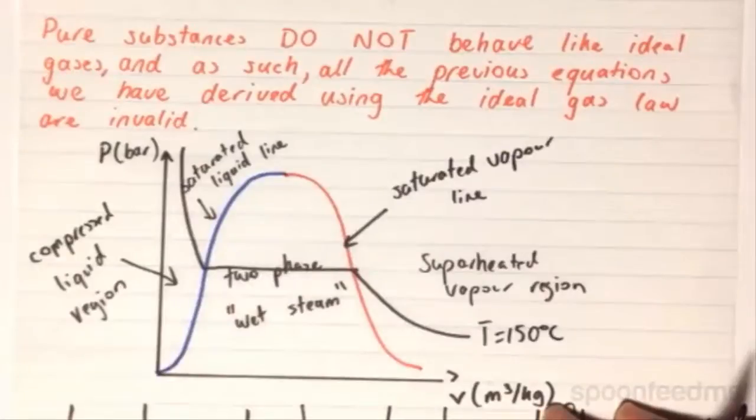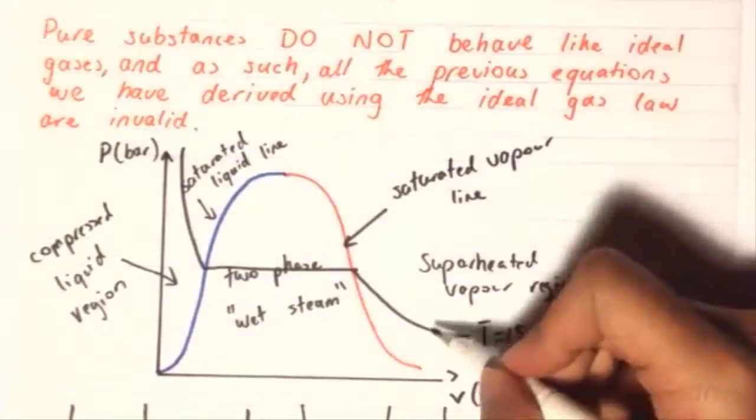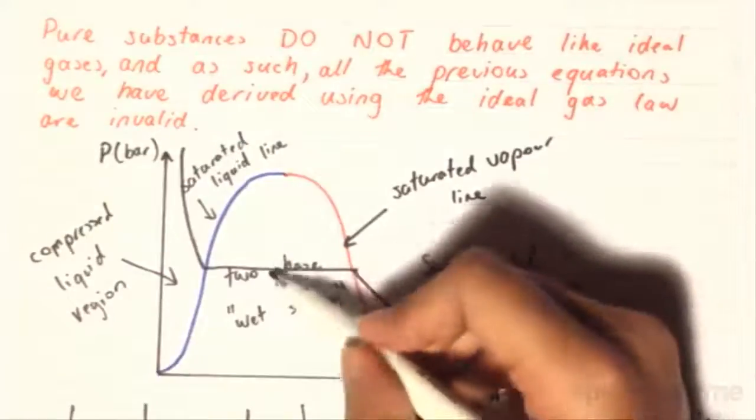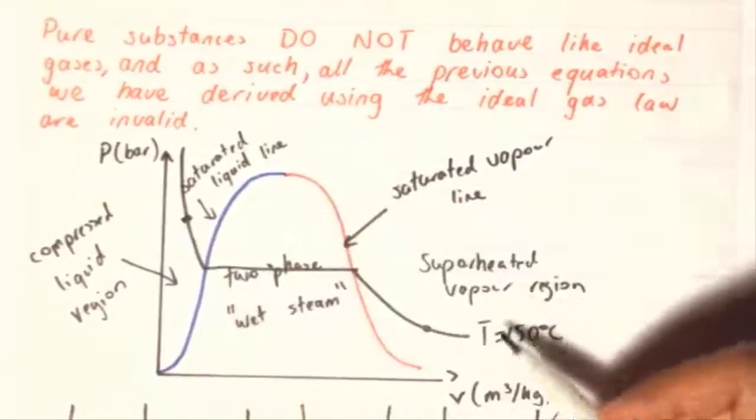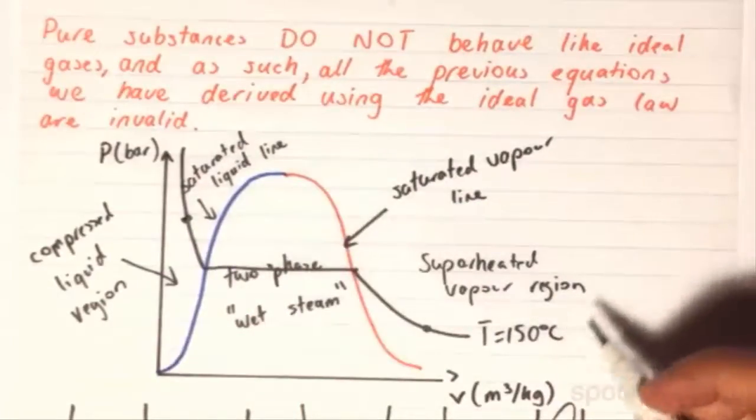Essentially, what it's saying over here is that any substance that exists on the line, be it here, here, or here, will have 150 degrees Celsius as its temperature.